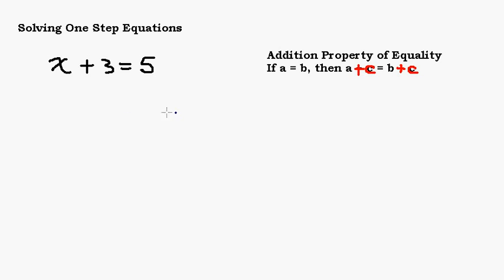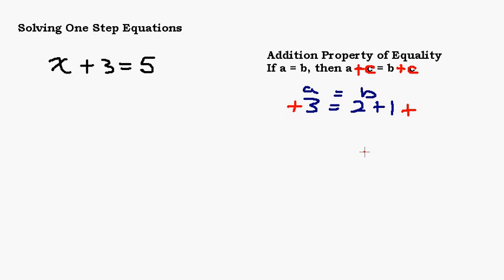Let's do a quick example without variables. We know 3 equals 2 plus 1. If I add 10 to both sides of this equation, I still get a true statement: 13 on the left and 13 on the right. If I add negative 10 to both sides, that's also true — negative 10 plus 3 is negative 7, equals negative 7.